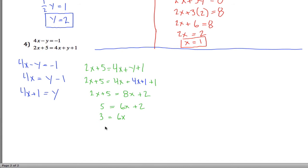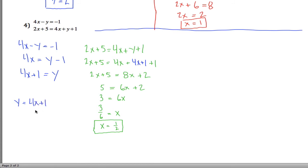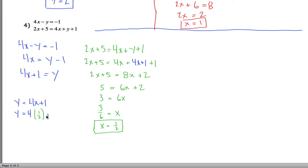Divide both sides by 6 and get 3 sixths equals x. If you simplify that fraction, 3 sixths is really just 1 half. So x equals 1 half — fractions for the answer. Now I want to know what y is. I go back up to my equation where y equals 4x plus 1, and rewrite it replacing x with 1 half. 4 times 1 half — think of this as 4 over 1 times 1 over 2 — gives 4 over 2, which reduces to 2. Plus 1, so y equals 3. My answer is x equals 1 half and y equals 3.